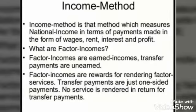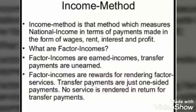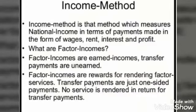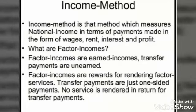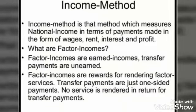Only earned income is included in national income — not unearned income, meaning income for which no factor service has been rendered. For example, old age pension received by senior citizens paid by the government is not earned income; it is a kind of help for which they do not render any service. Such payments are called transfer payments or transfer receipts, and they are not to be included in the estimation of national income.